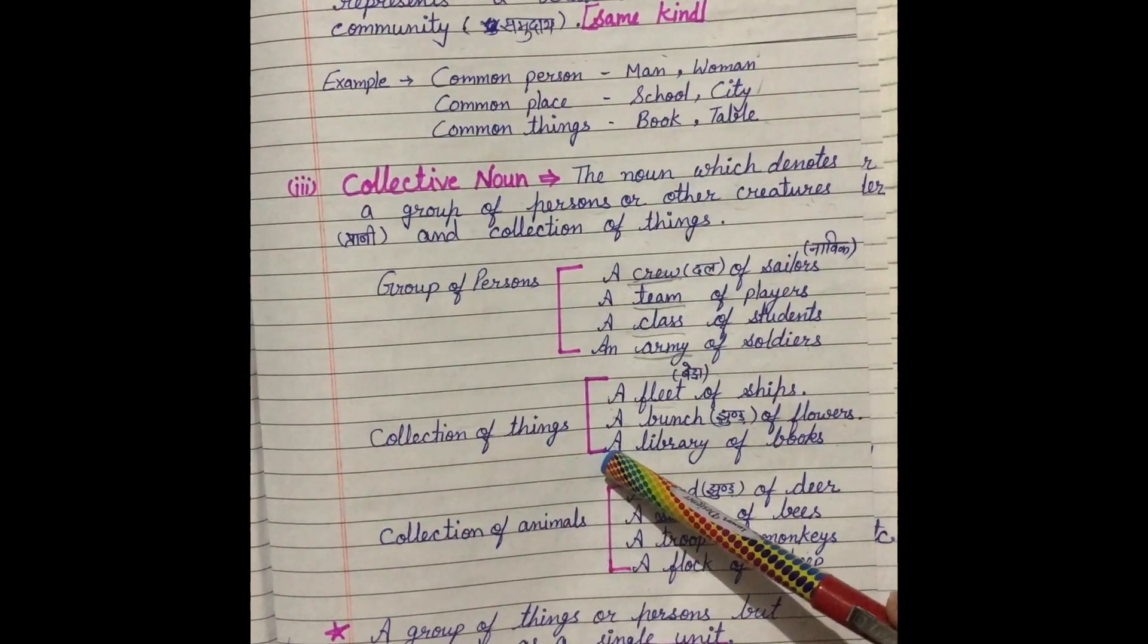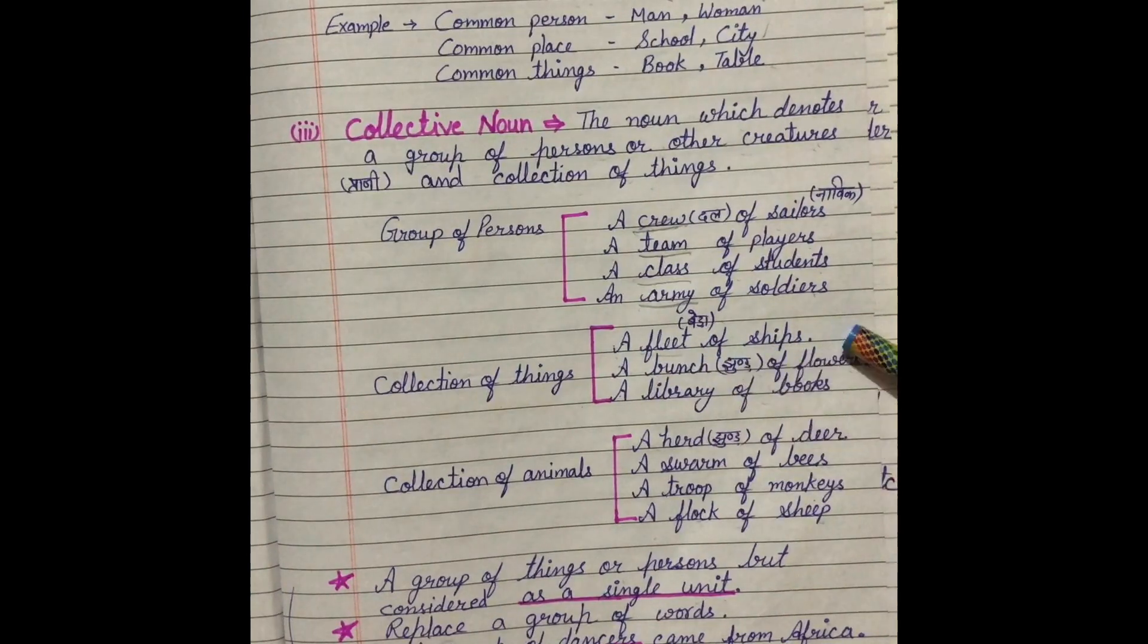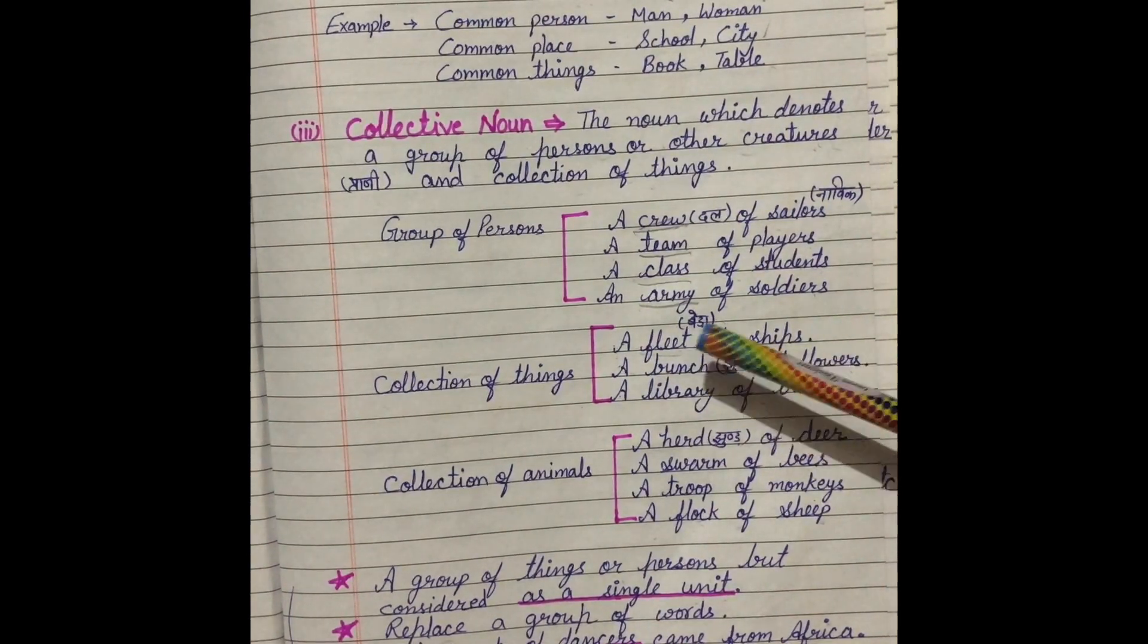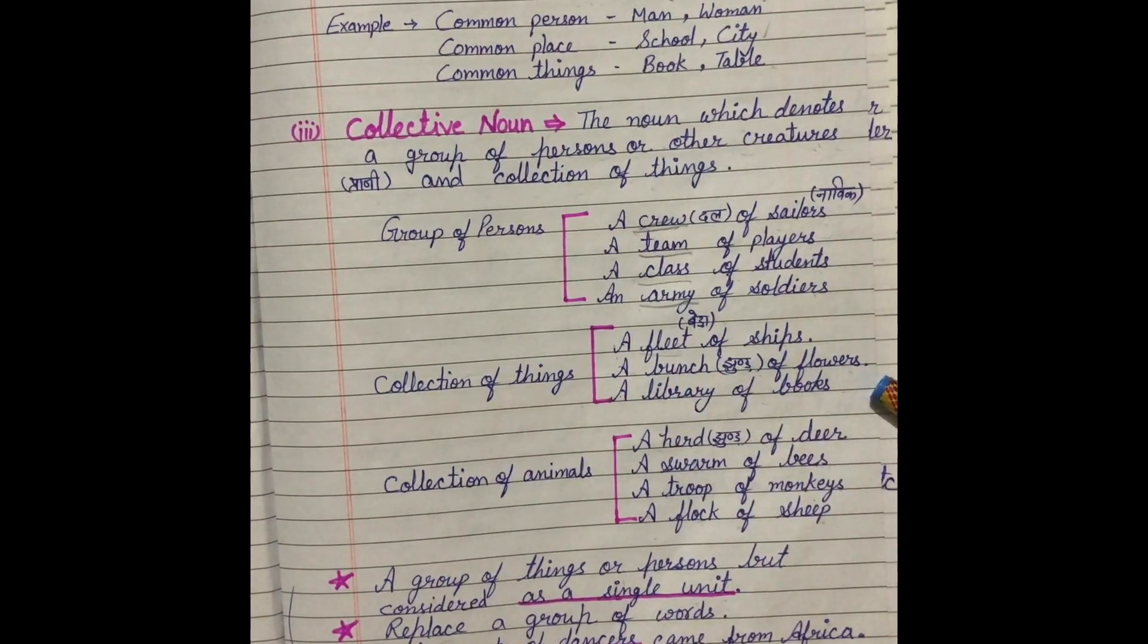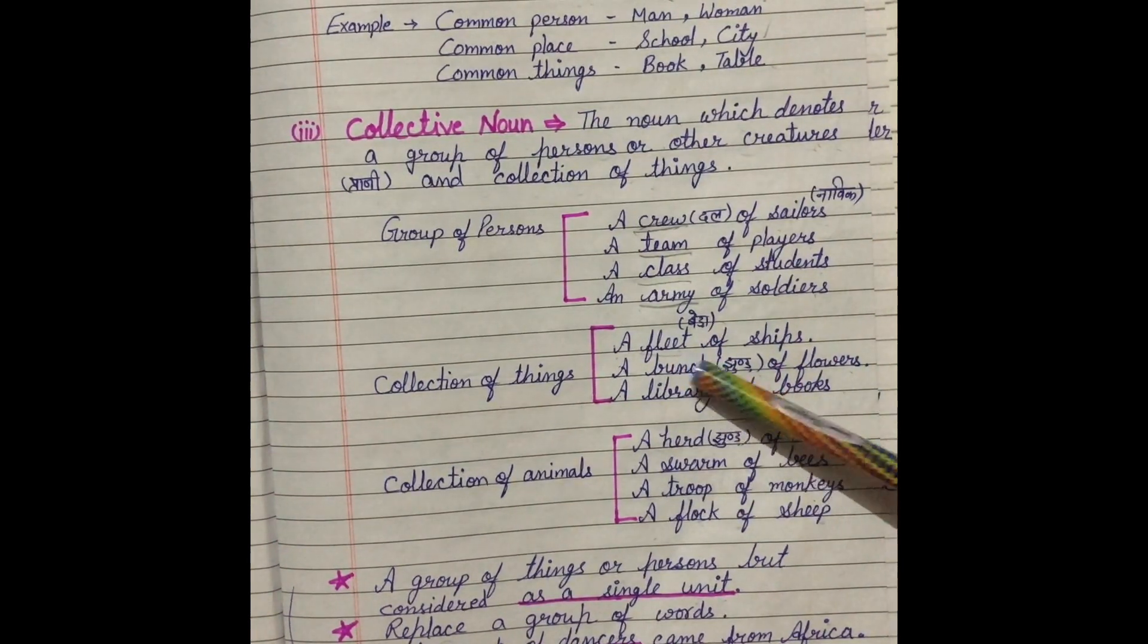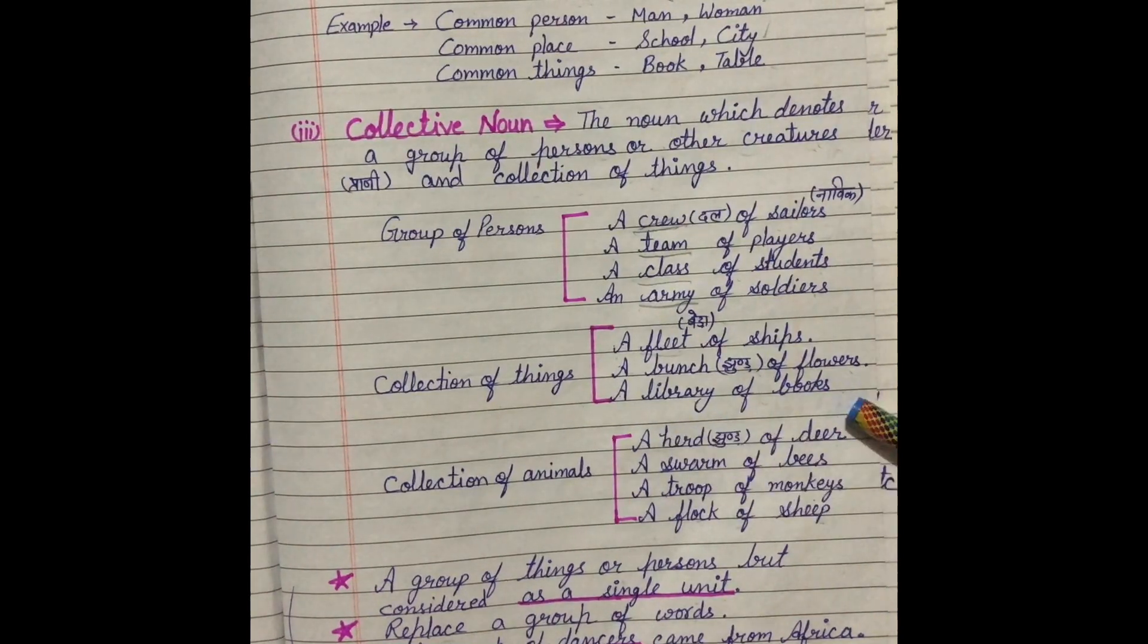Collection of things. Jo cheejo ka group hota hai. A fleet of ships. Jahajon ka jo group hota hai, that is called a fleet. A bunch of flowers. Jo phoolo ka group hota hai, that is called a bunch. And grapes ka jo group hota hai, that is also called bunch. A library of books.